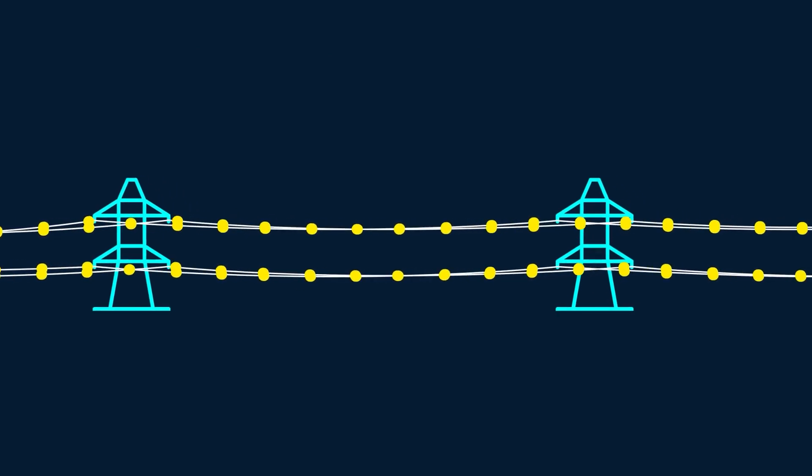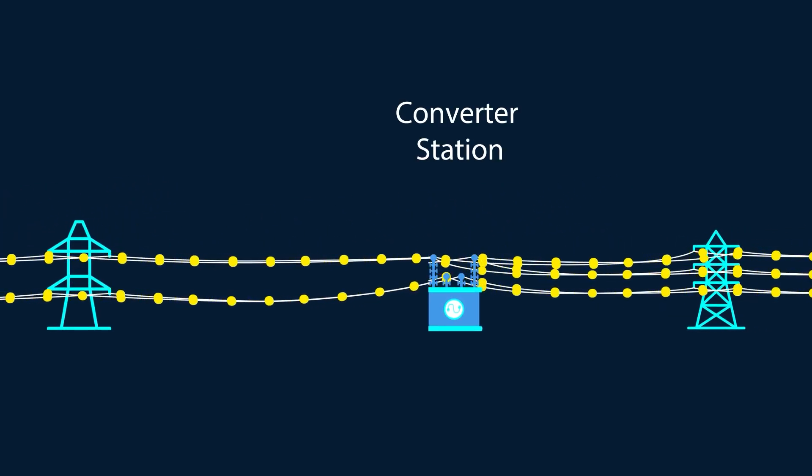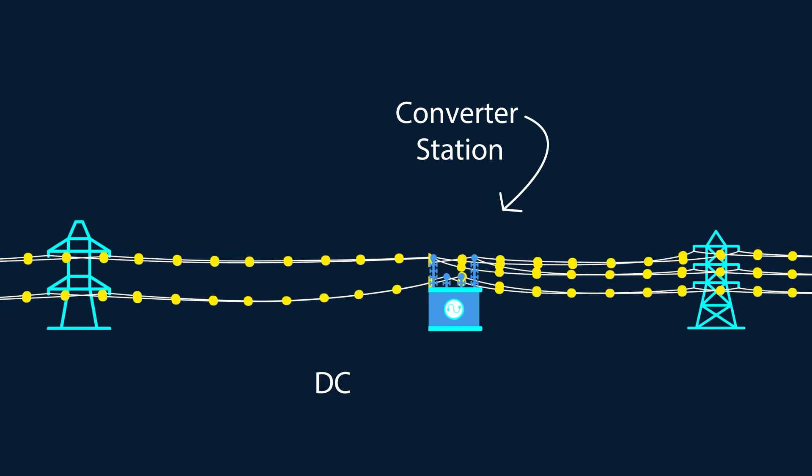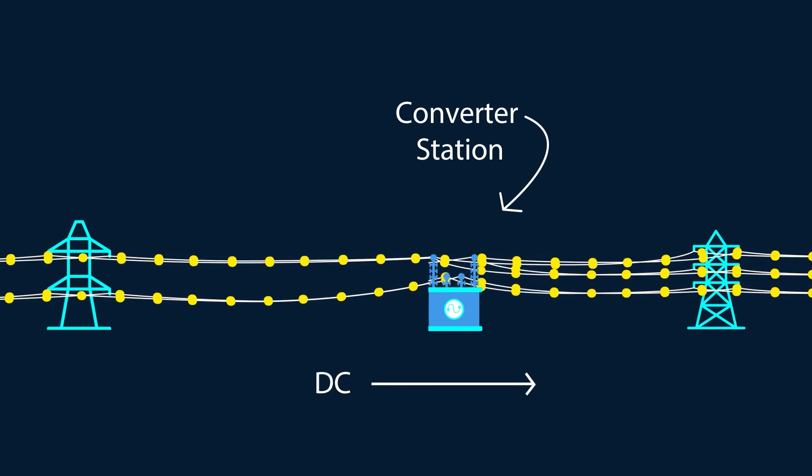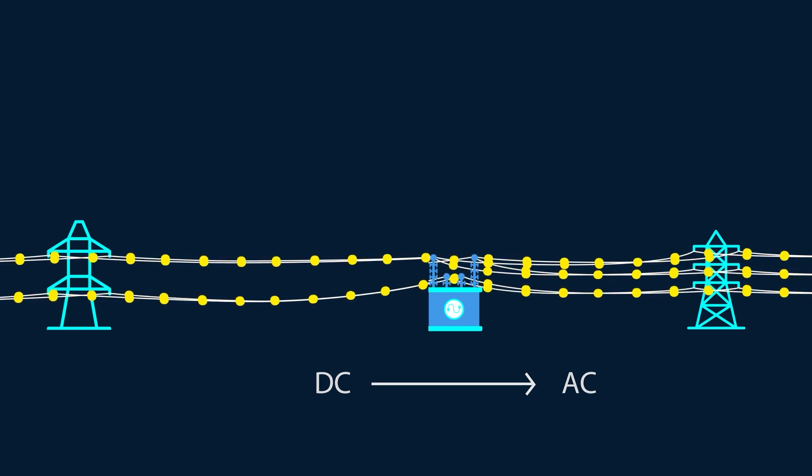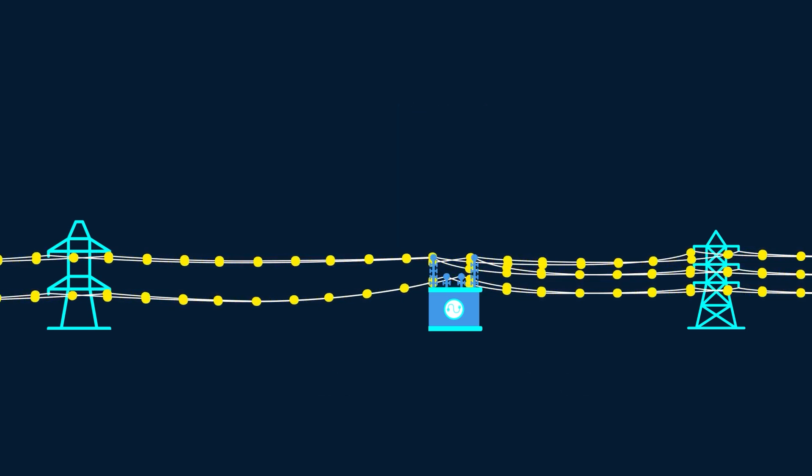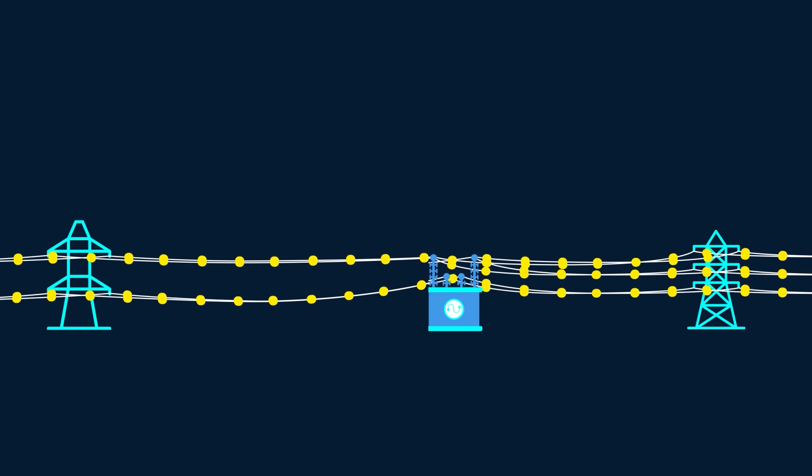HVDC lines use additional hardware called converter stations that convert DC electricity back into AC to be used on the grid. These converter stations are also what allow the flow of electricity to be controlled.